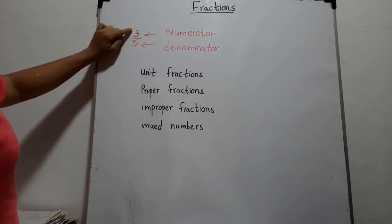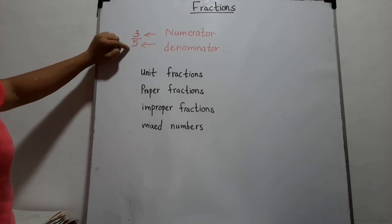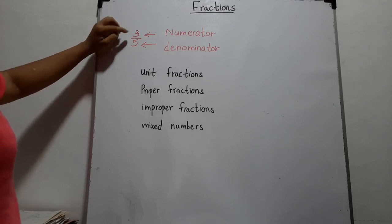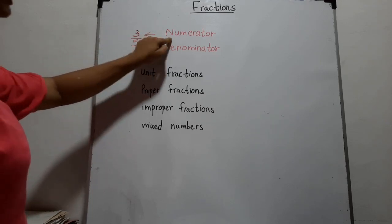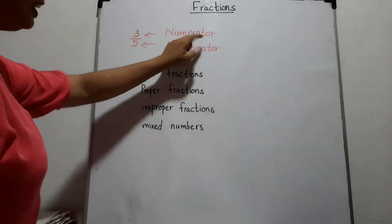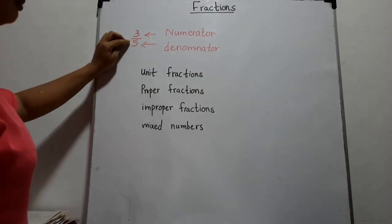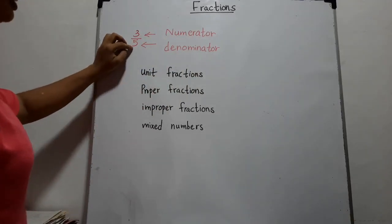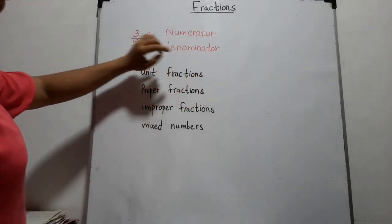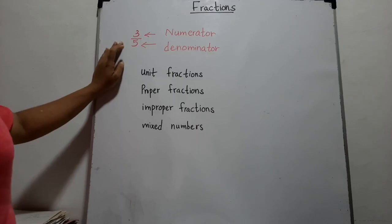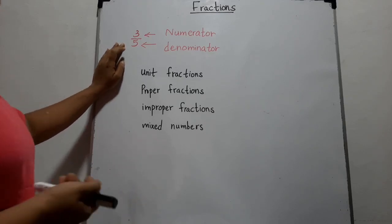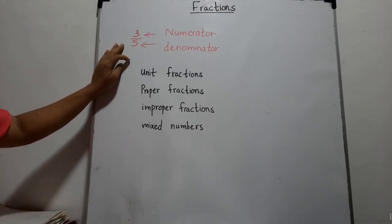When we consider this fraction, the number over the line is called the numerator. The number below the line is called the denominator. Then you have learnt some types of fractions.